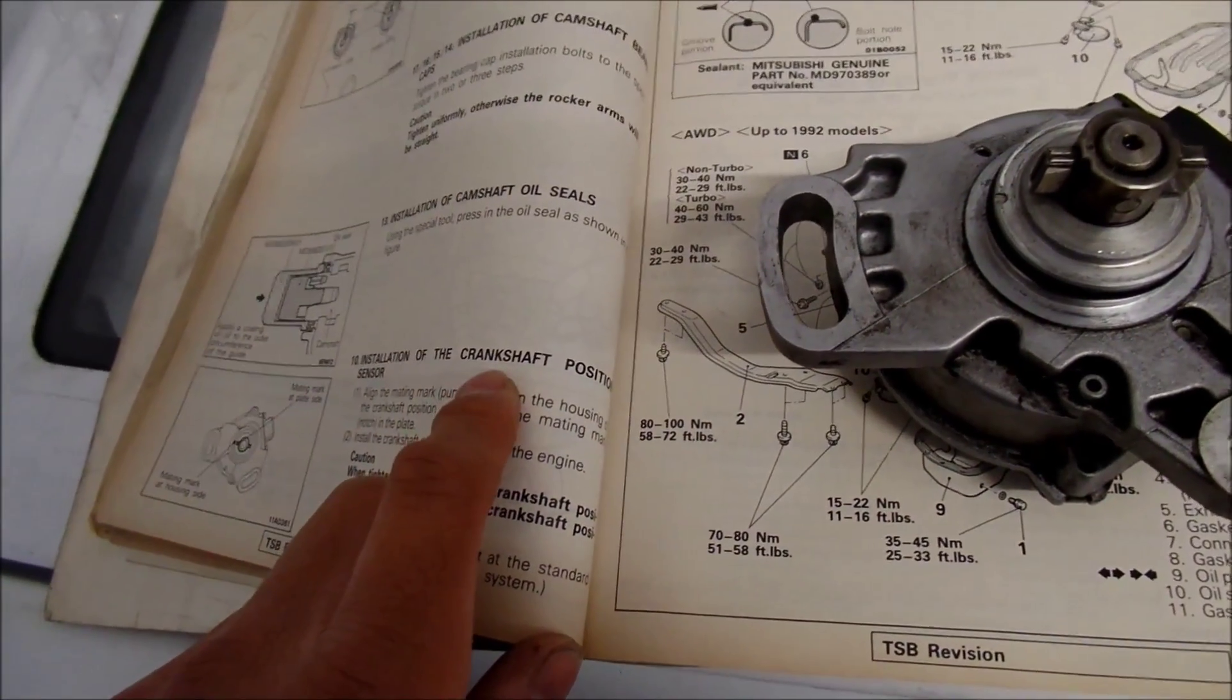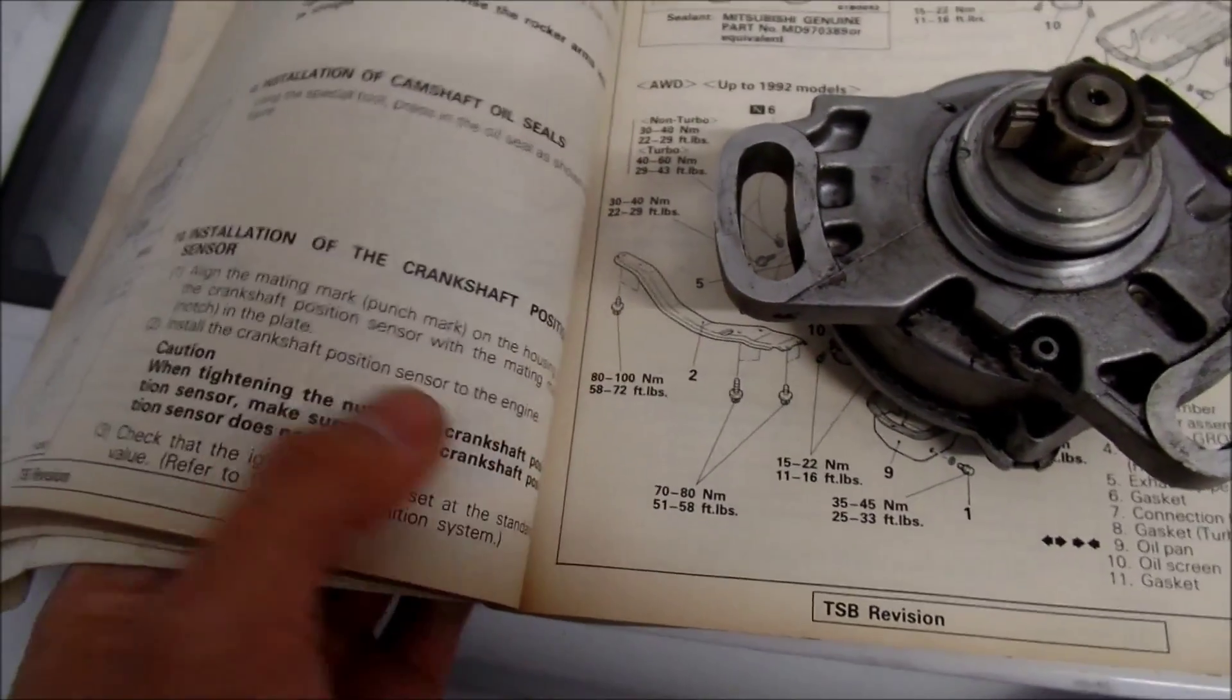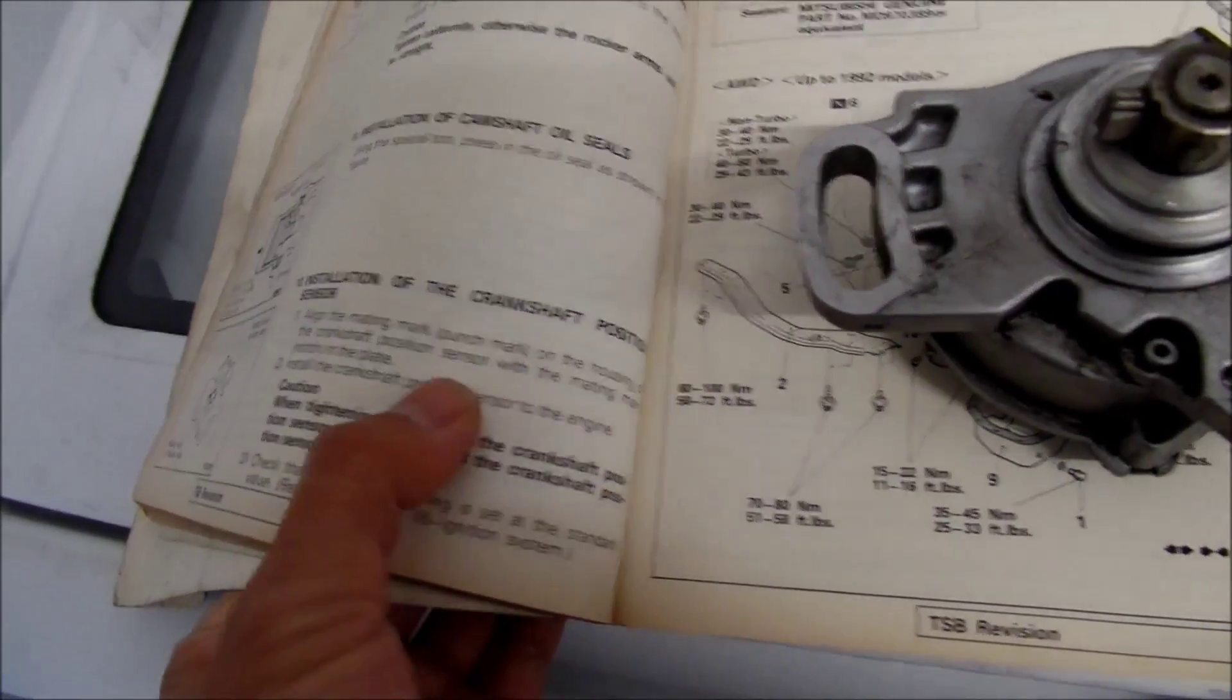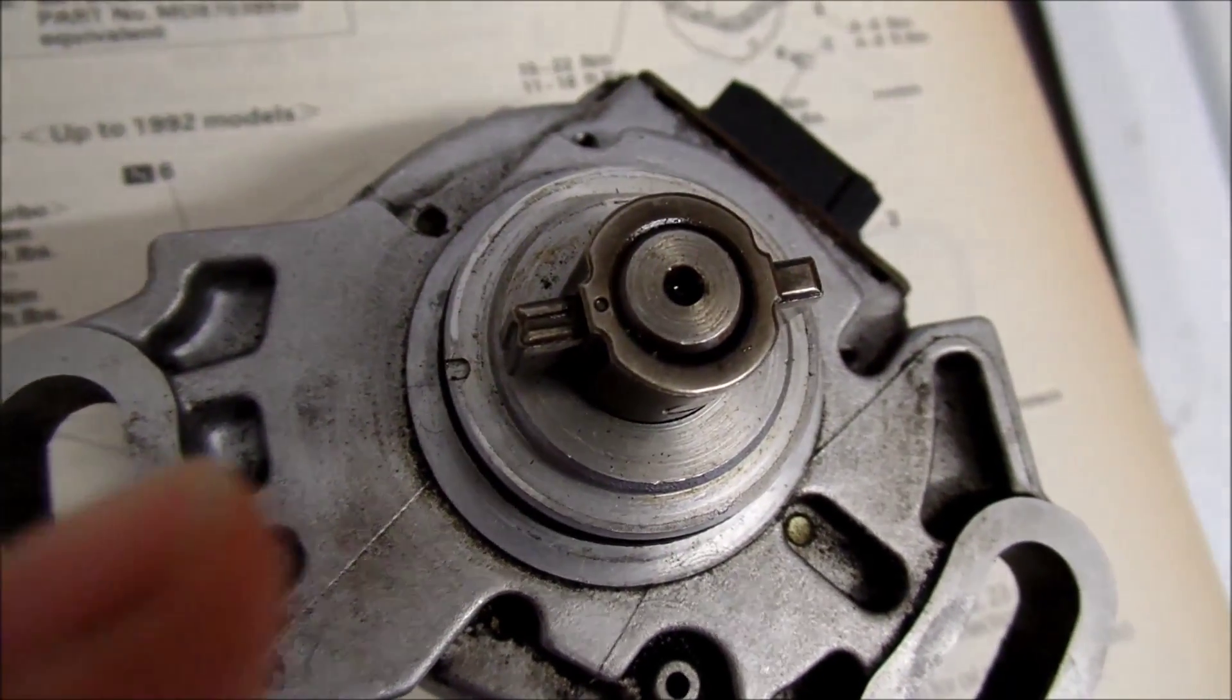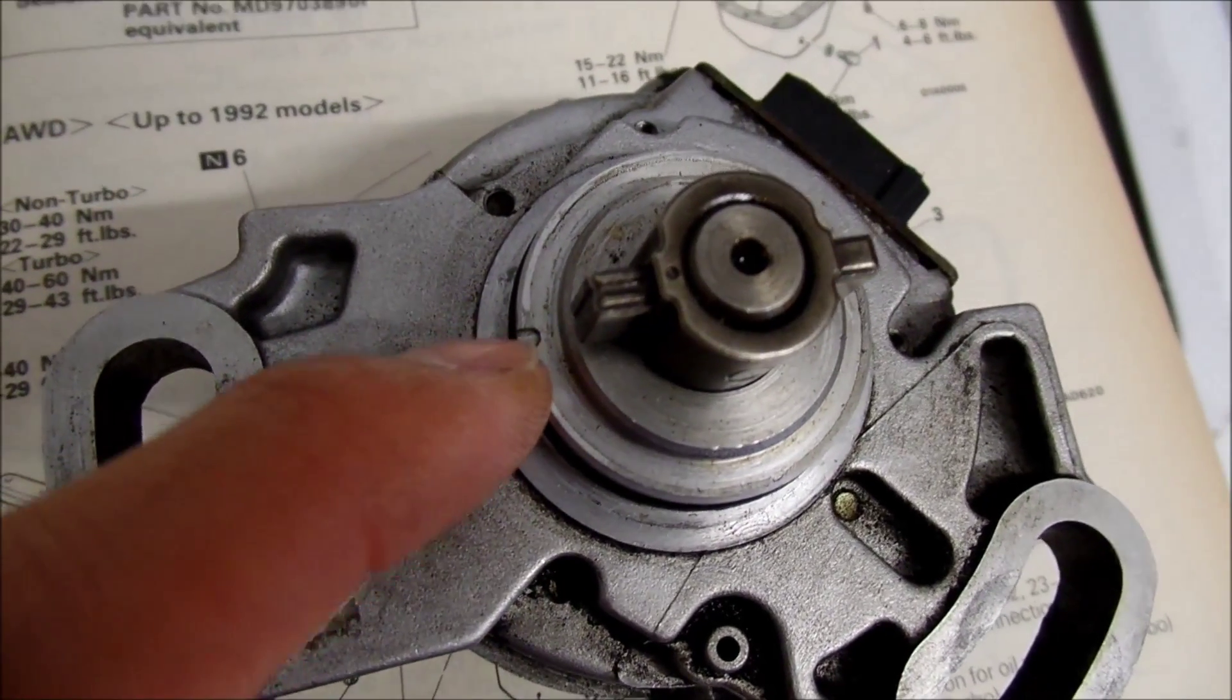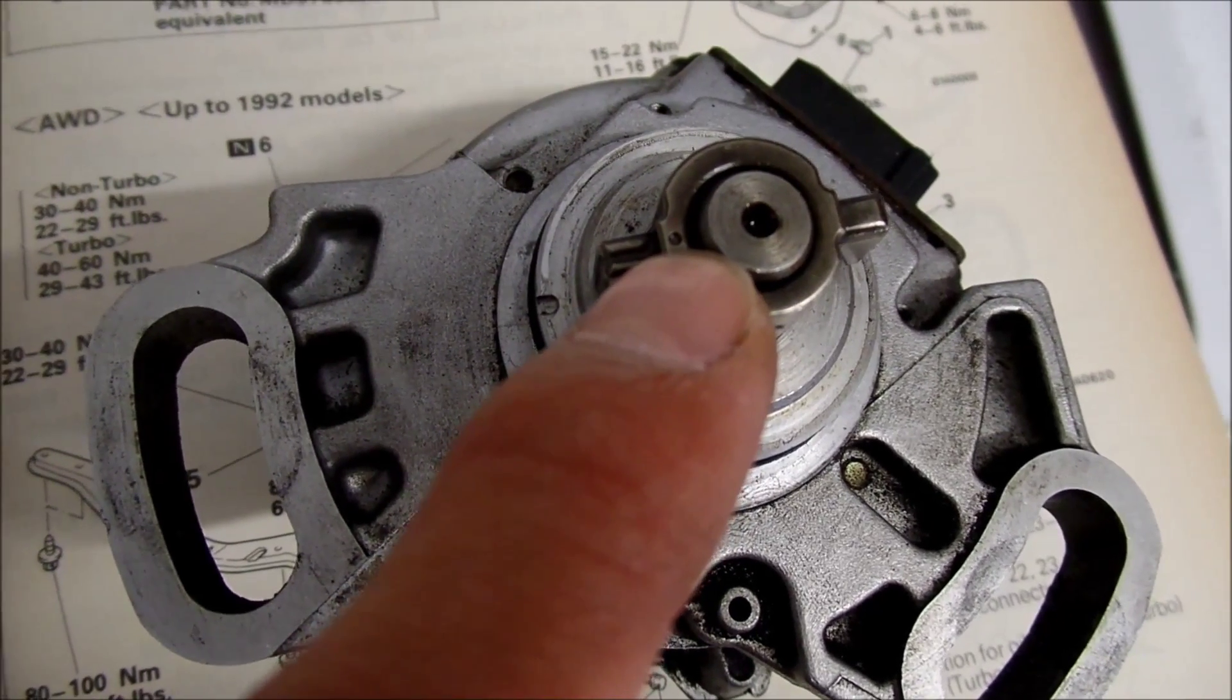Installation of the crankshaft position sensor. So align the mating mark, punch mark on the housing of the crankshaft position sensor with the mating mark notch in the plate. Here, let's see. Is this punch mark on the housing? That's what they're talking about.